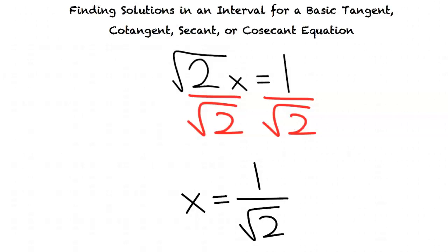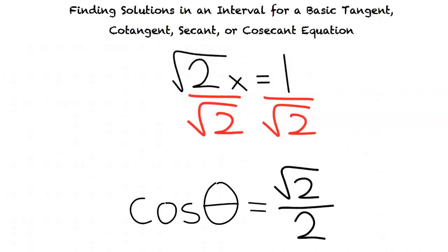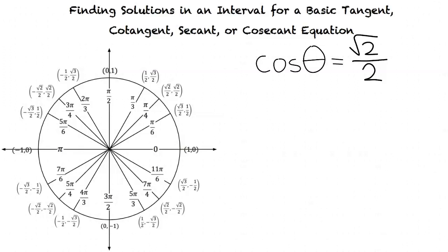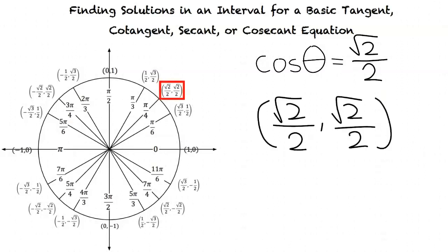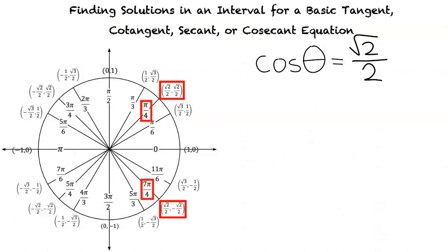We eliminate the square root from the denominator by multiplying both numerator and denominator by square root of 2, resulting in x equals square root of 2 over 2. This converts our secant coordinate to a cosine coordinate. Looking at the unit circle for an x-coordinate equal to square root of 2 over 2, we find two coordinate points: square root of 2 over 2 comma square root of 2 over 2, and square root of 2 over 2 comma negative square root of 2 over 2. The corresponding radian values are π/4 and 7π/4. Thus, our final answer is theta equals π/4 and 7π/4.